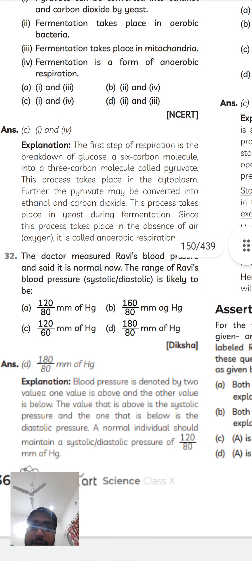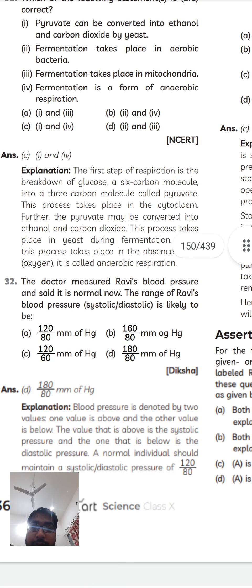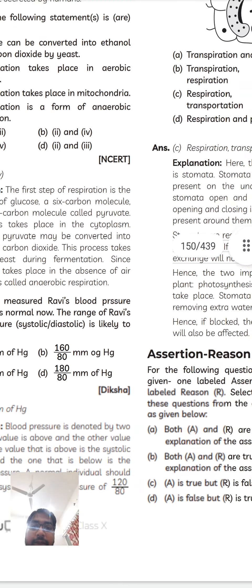Next question. The doctor measured Ruby's blood pressure and said to be normal. Now the range of Ruby's blood pressure systolic is like 120 divided by 80 mmHg. Already noted, option B. Next.